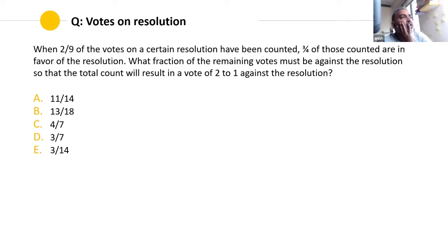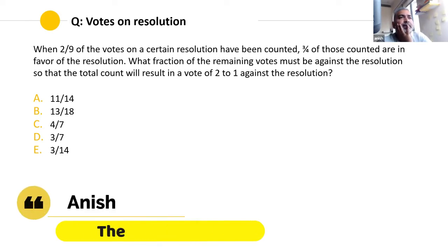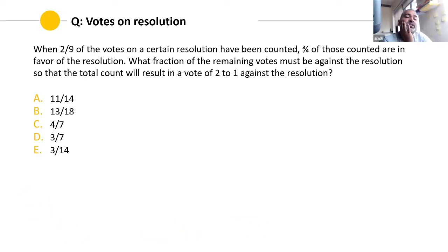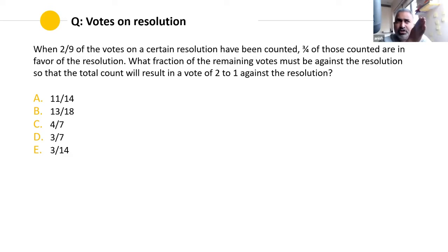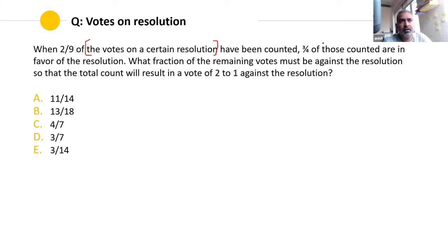When 2/9 of the votes on a certain resolution have been counted, three-fourths of those counted are in favor of the resolution. It's essential to understand: three-fourths of what? Of the votes counted. And two-ninths of what? Of the total votes on the resolution. So basically, three-fourths of the two-ninths votes are in favor.